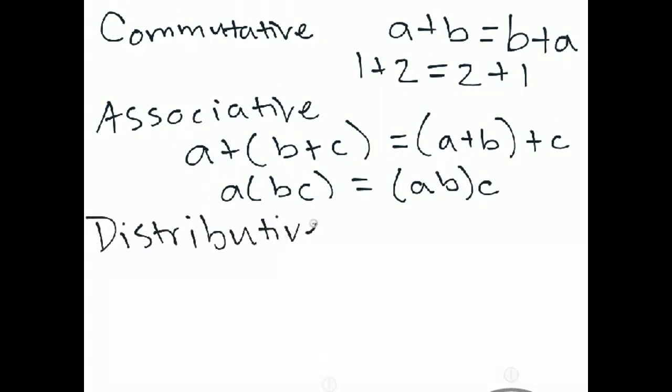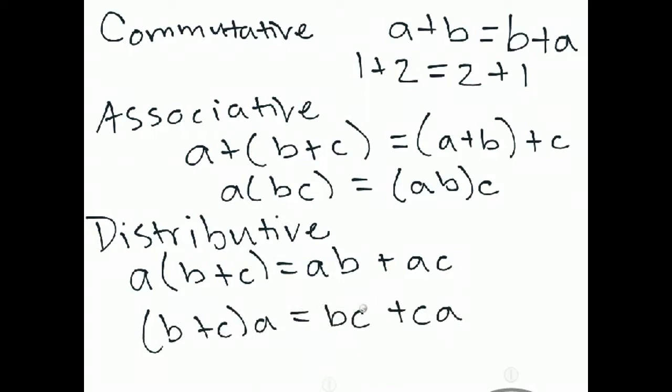And the last property we're going to discuss is the distributive property, and that's talking about distributing multiplication over addition. If we multiply A times the quantity B plus C, that's the same as saying A times B plus A times C. We could also do that by multiplying on the right-hand side. That's the same as BA plus CA.